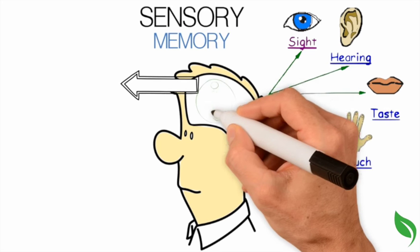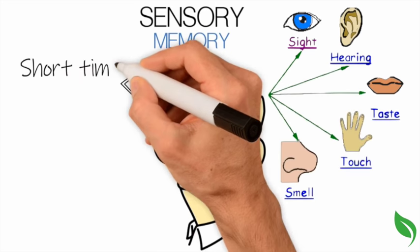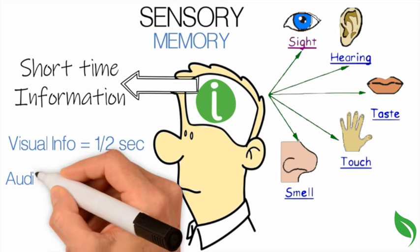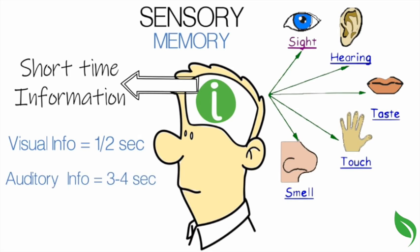Sensory memory can take a lot of information, but information is stored for only a very short time, with visual information being stored for less than half a second, and auditory information being stored for only three to four seconds.